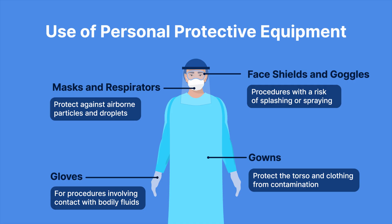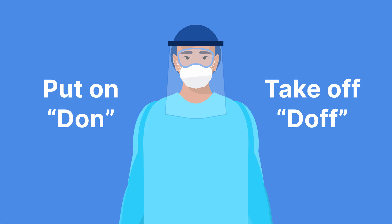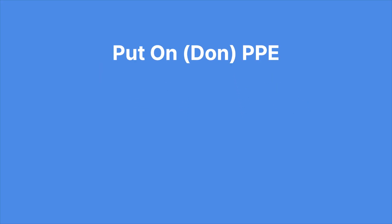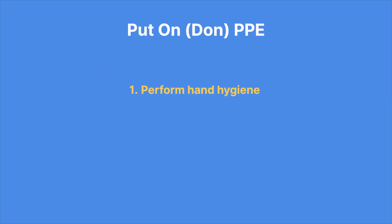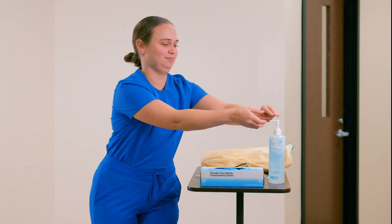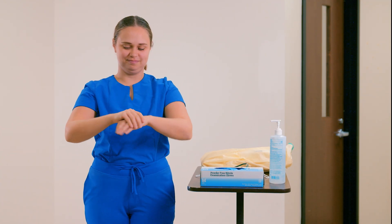While PPE provides a layer of protection, it is important to understand that there are correct ways to put on, or don, PPE, and correct ways to take off, or doff, PPE. When donning personal protective equipment, you should perform the following steps. Step 1: Perform hand hygiene. Always start with clean hands, as this minimizes the risk of contaminating your gown during the donning process.